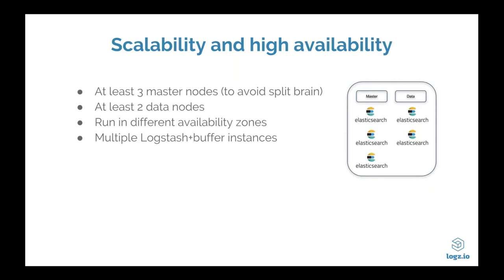In a small environment — for testing, development, or a small production setup — a classic ELK stack architecture looks as follows: Beats collect data from your servers, applications, or containers. FileBeat tracks log files and performs some basic processing, then forwards data to Logstash for more advanced transformation. Logstash aggregates, filters, and sends the data to Elasticsearch for indexing, and you use Kibana to analyze it.